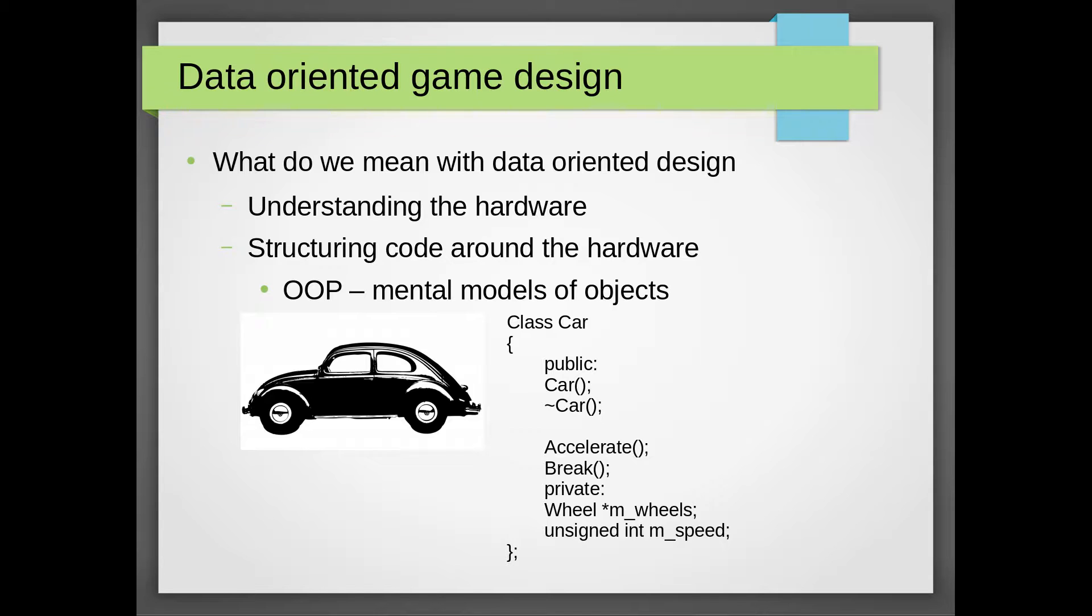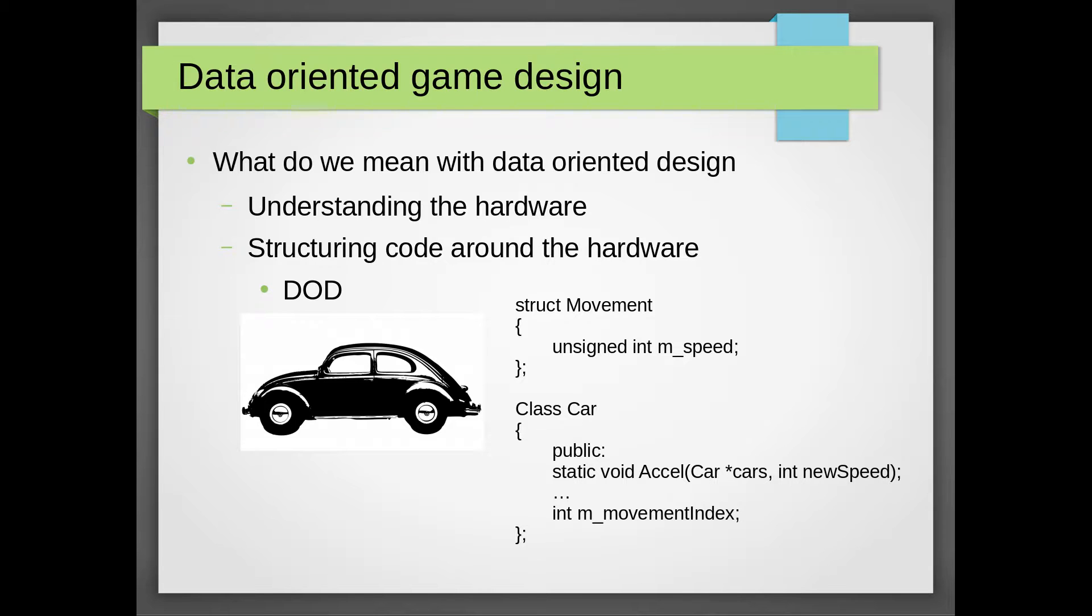In a data-oriented design you might instead want to model it around a set of common operations such as accelerating. For example we might know that we are going to have to process a lot of cars and one of the things we are going to need to do is update the speed for all our cars.